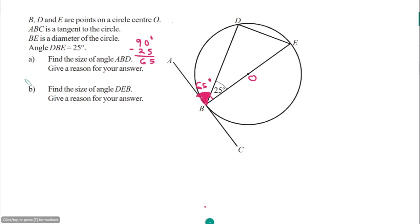To find angle L: since angles K and K on both sides plus L in the quadrilateral must total properly, we add 56 plus 56 equals 112, then subtract from 180: angle L equals 180 minus 112 equals 68 degrees.